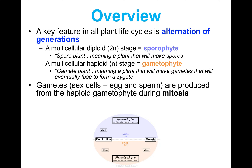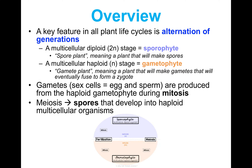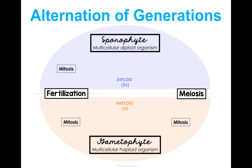Mitosis takes the gametophyte that is already haploid and makes gametes, which are also haploid cells. Meiosis is going to make spores that then develop into haploid multicellular organisms. It's a little bit tricky because it's so different from us, but the next diagram is going to help break this down a bit simpler.